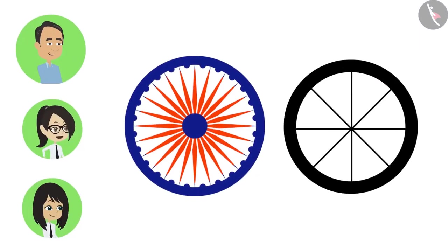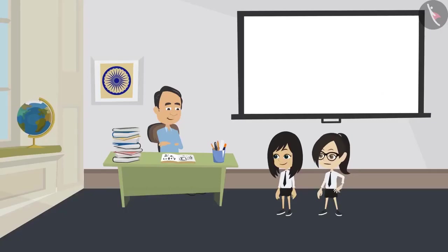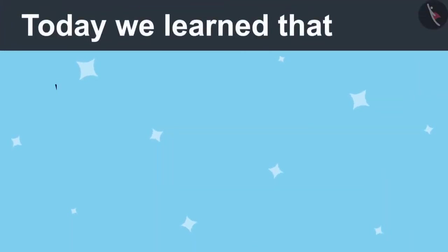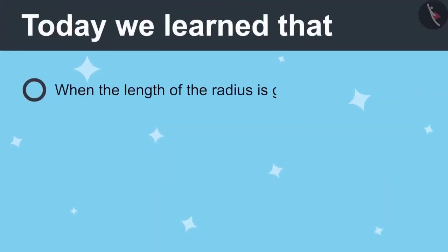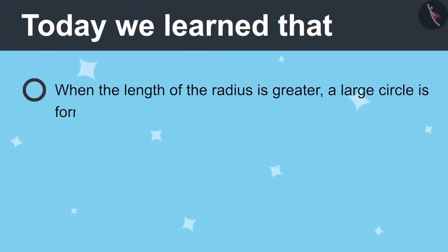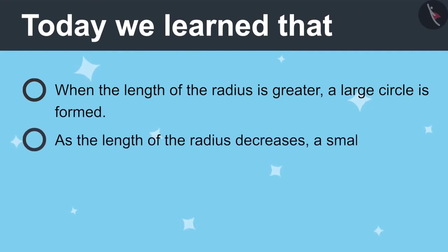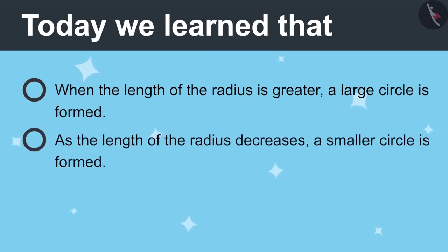And also in the wheel of our bicycle. Today we learned: when the length of the radius is greater, a large circle is formed. As the length of the radius decreases, a small circle is formed. And there are many radii in one circle.